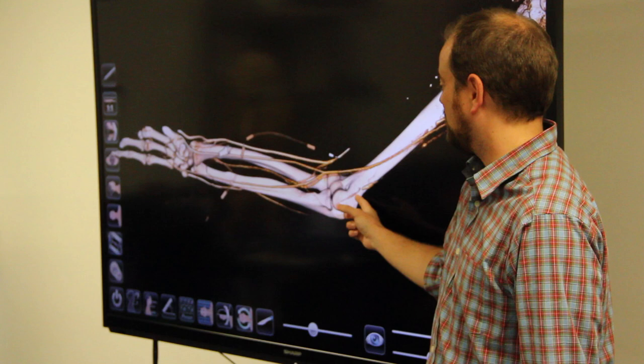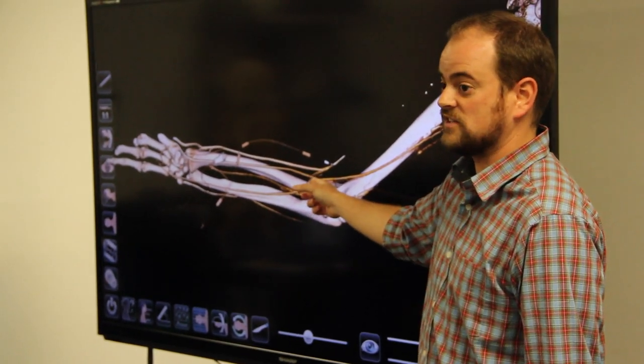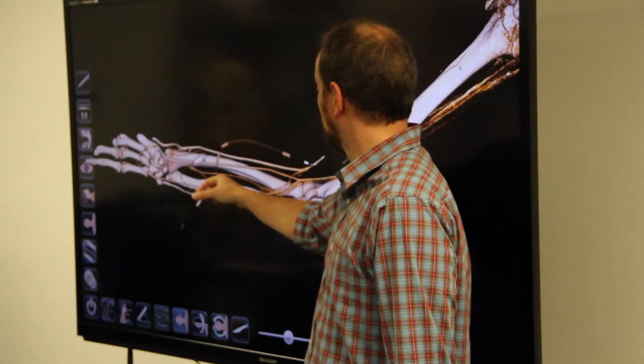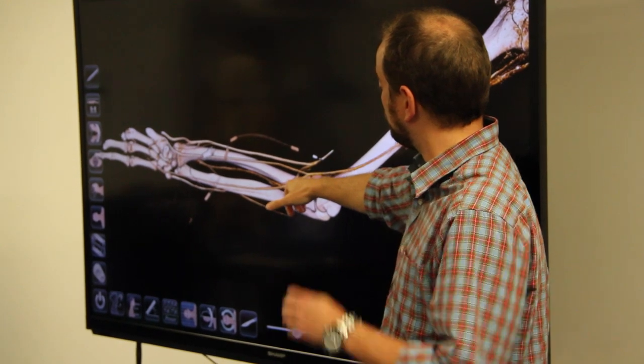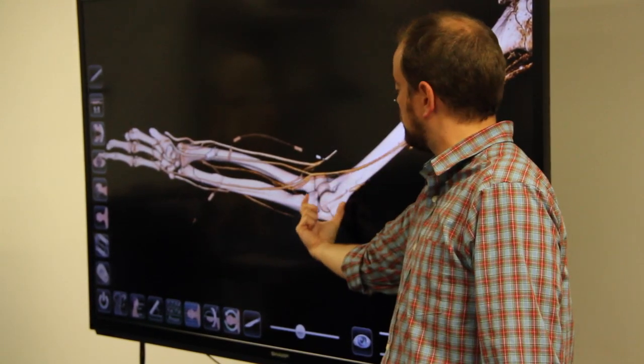So this one's going to be the ulna. The lateral side is going to be the radius. So remember that the radius head, the radial head looks like a golf tee. The ulna's kind of U-shaped.